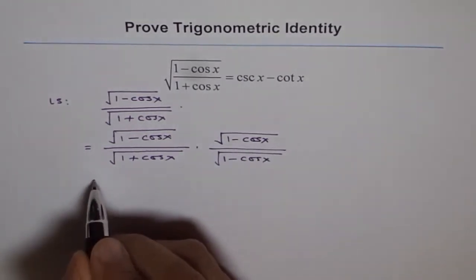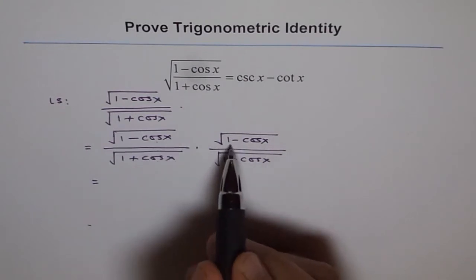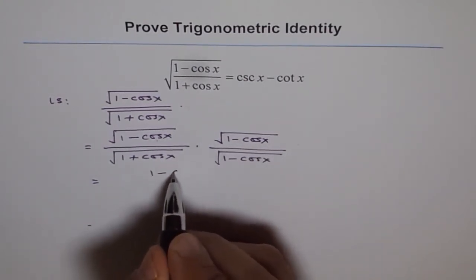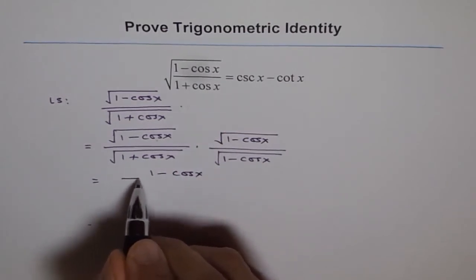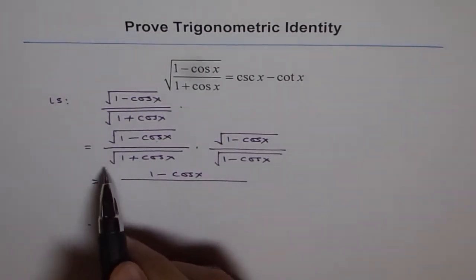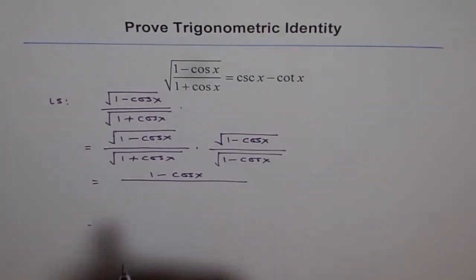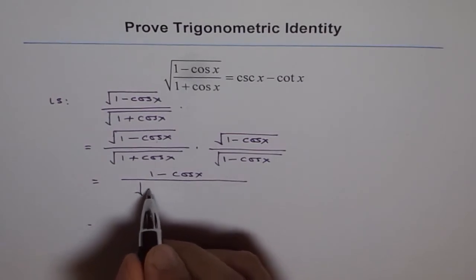Now numerator gives me 1 minus cos x, 1 minus cos x square. Square root will give me 1 minus cos x in the numerator. In the denominator I got square root within square root: 1 plus cos x times 1 minus cos x, so we get square root of 1 minus cos square x.